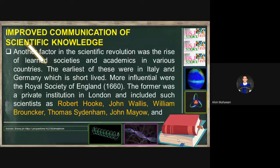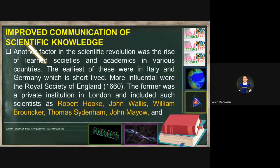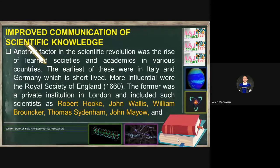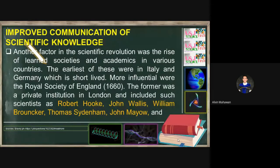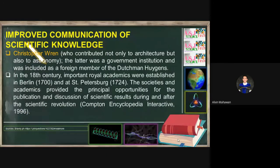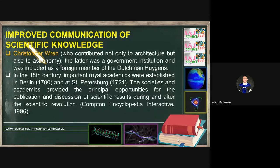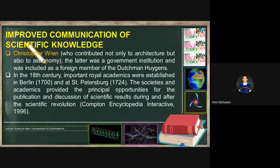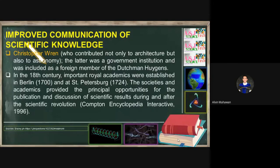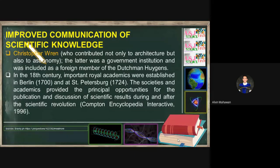Because there is a need for the submission of students or sending the pupils or the sons and daughters to school, there is also improvement in terms of communication of scientific knowledge. That is the reason why there was the Royal Society of academics. Improved communication. The Royal Society in England, the earliest of this were in Italy and Germany which was short-lived. More influential was the Royal Society of England. The former was a private institution in London included such scientists as Robert Hooke, John Wallace, William Brooker, Thomas Sydenham, and John Mayo. Jose Rizal, Dr. Jose Rizal, had been into the Royal Society and was one of the experts in medicine. He was good and worked with scientists there, just like Robert Brown. And of course, Christopher Wren contributed not only to architecture but also to astronomy.